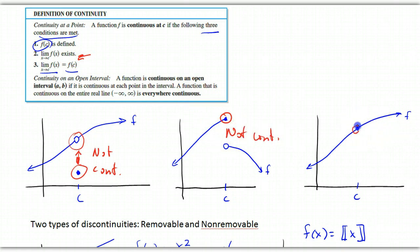Finally, here, f of c exists. The limit as x approaches c exists. And it is the same value. So, therefore, this is continuous.